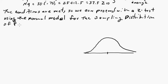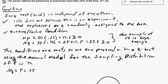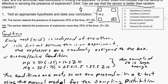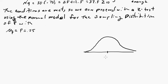The center of the model for p-hat would be p equals 0.25, the null hypothesized value, because we're assuming that's true. The standard deviation of p-hat, using the model, would be the square root of 0.25 times 0.75 divided by 50.